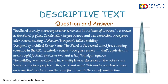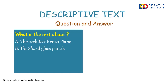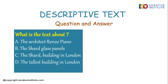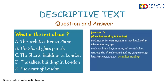Ini adalah contoh dari descriptive text tentang The Shard. Sekarang kita jawab pertanyaannya ya. What is the text about? A. The architect Renzo Piano. B. The Shard glass panels. C. The Shard building in London. D. The tallest building in London. E. The heart of London. Jawabannya adalah D — The tallest building in London. Pertanyaan ini menanyakan isi dari keseluruhan teks. Pada awal paragraf, menjelaskan tentang The Shard sebagai gedung yang tertinggi — kata kuncinya adalah 'the tallest building.'